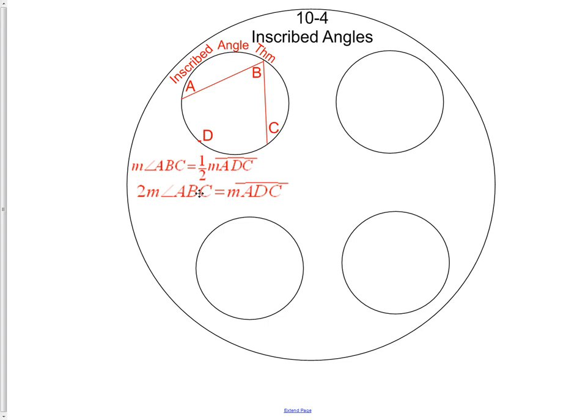Here it's written out with a formula. The measure of angle ABC is equal to one half the measurement of arc ADC, or two times the measure of the angle is equal to the measurement of the arc.